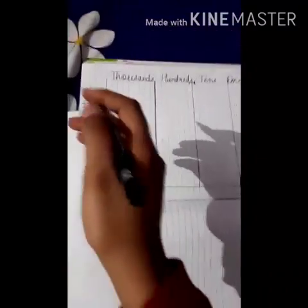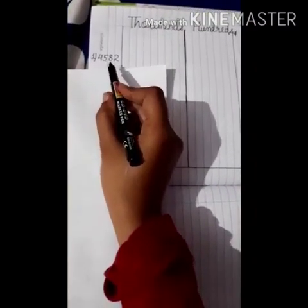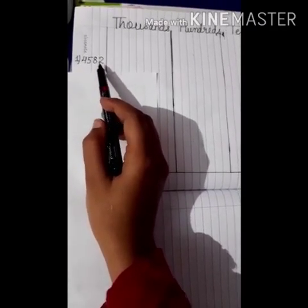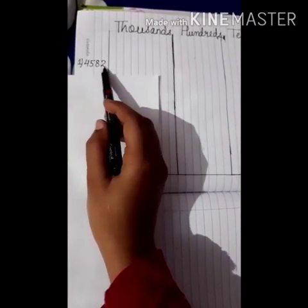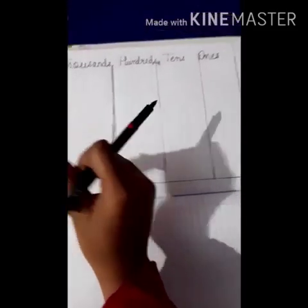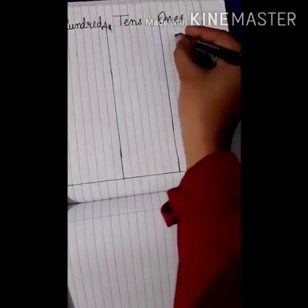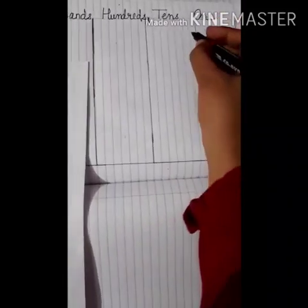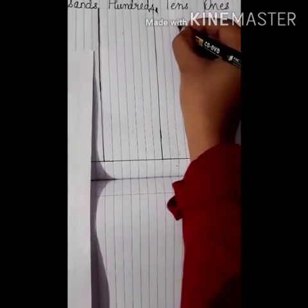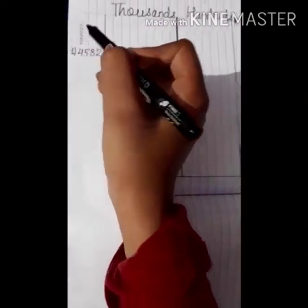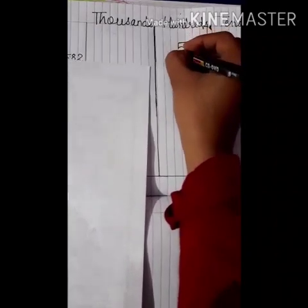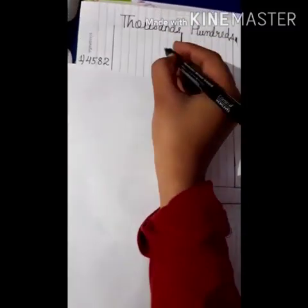Our first number is 4, 5, 8, 2. In the place value, we will always start from the last number. The last number is 2, so 2 is on the 1's place. 8 is on the 10's place. 5 is on the 100's place. And 4 is on the 1000's place.